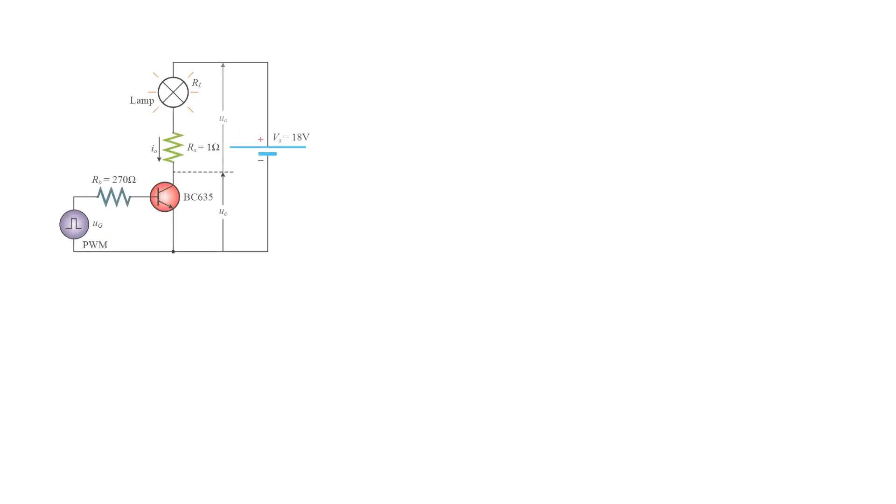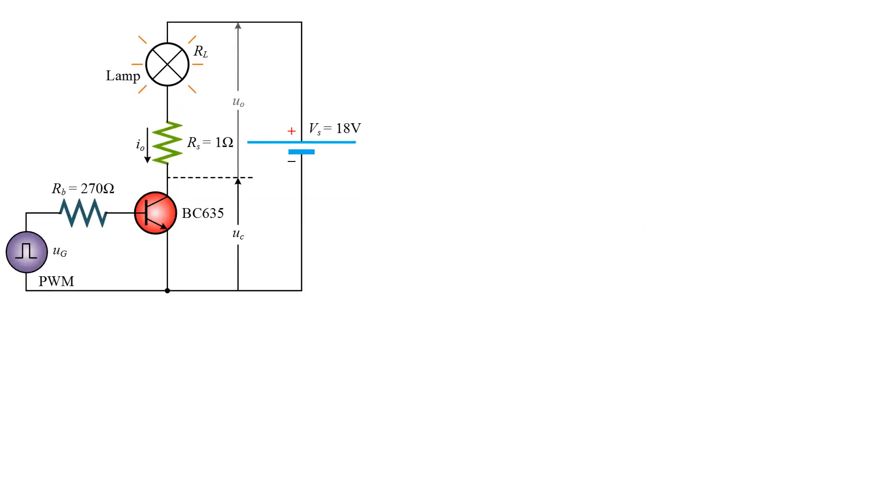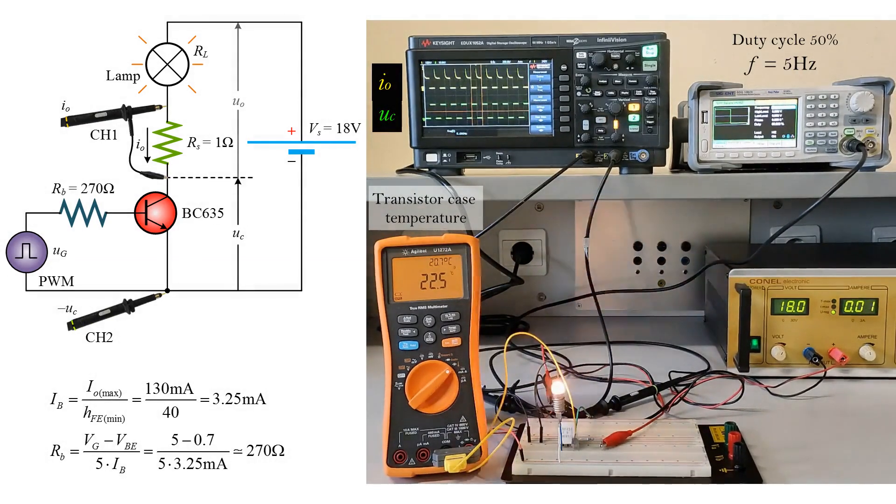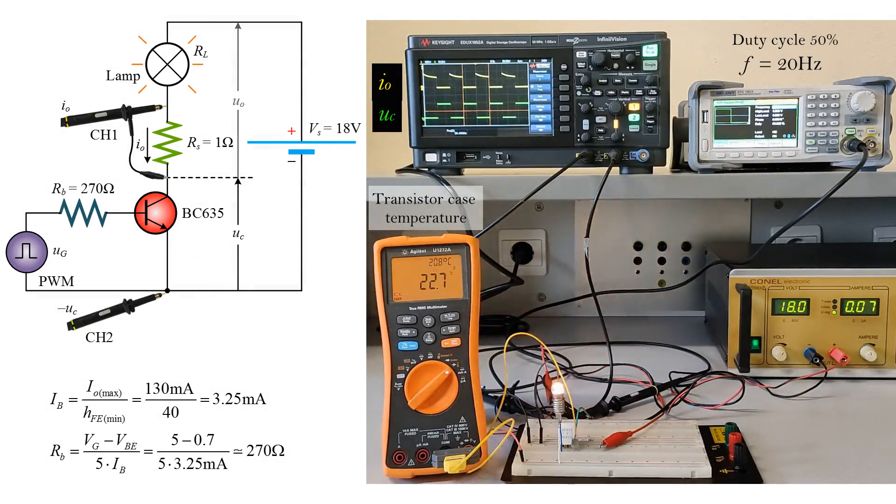When the transistor acts as a switch, the power control to the lamp is provided by the PWM signal with an amplitude of 5 volts. The frequency of the signal must be high enough so that the brightness is constant. A frequency of 50 hertz is sufficient for the human eye.